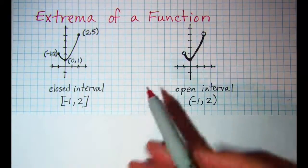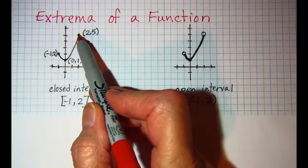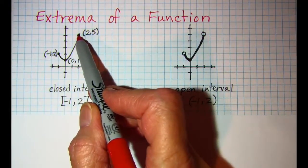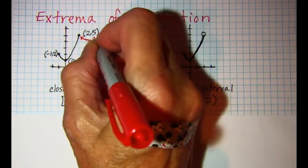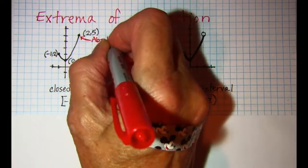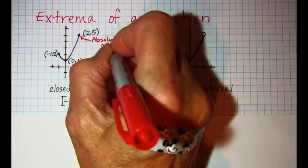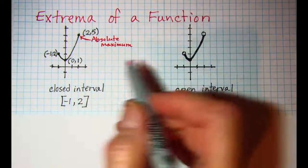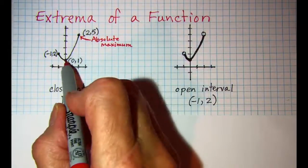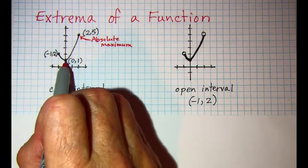You can see that we have an absolute maximum here at the point (2,5), and we have an absolute minimum here at the point (0,1).